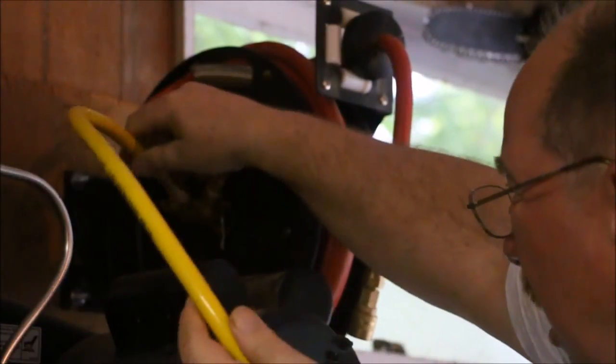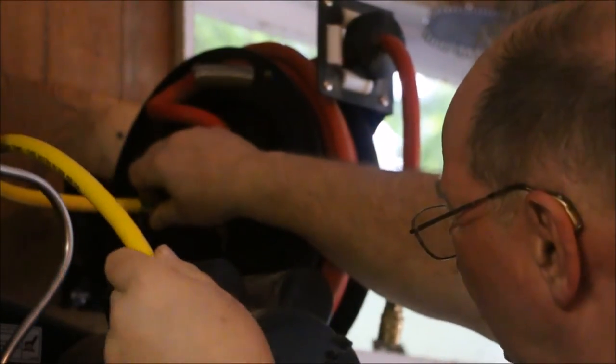This piece of hose is called a whip. It's for actually using on air tools to give them a little more flexibility on the end, but it worked for this job so I'm going to use it.